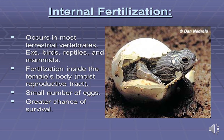In internal fertilization, the fertilization takes place inside the female body in a moist reproductive tract. The best examples of internal fertilization are birds, reptiles, and mammals. There is a small number of eggs but a greater chance of survival.